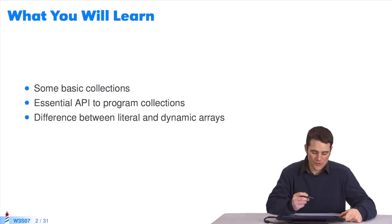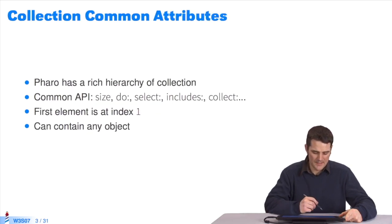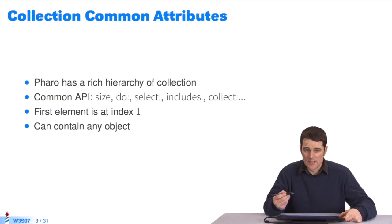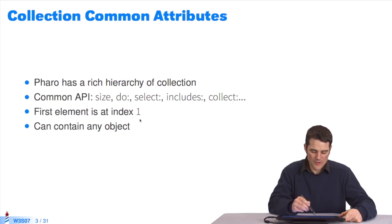We'll also see the difference between literal and dynamic collections. The collections API is very diverse. There are many types of collections. They all share a common API which is well-organized and makes a programmer's life easier. What's specific about Pharo is that the first element is at index 1, instead of 0 in other languages. Collections can contain any type of objects in Pharo. It's not always the case with other languages.